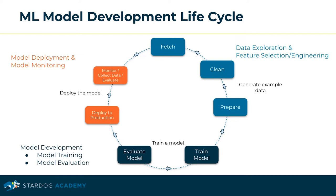We also call the process of combining attributes into a new reduced set of features as feature extraction. The next step in our model development lifecycle is the model development itself, which includes model training and model evaluation. The last step is about model deployment and model monitoring — deploying a new machine learning model into production, smoothing out the deployment process, and collecting data to evaluate the performance and quality of our model in production environments.